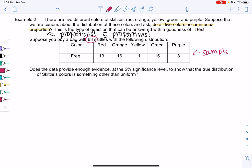So we have 13 reds, 16 oranges, 11 yellows, 15 greens, and 8 purples. And we want to know, does the data provide enough evidence at 5% to show that the true distribution of Skittles colors is something other than uniform? So uniform just means equal proportions.